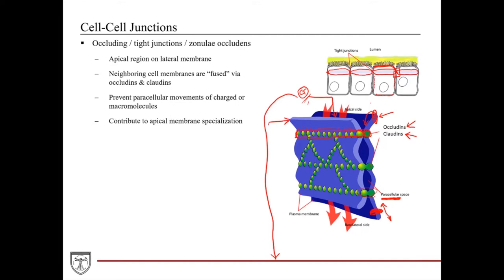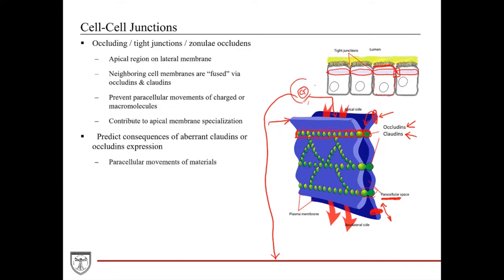Knowing all these functions, let's predict the consequences of aberrant expressions of claudins or occludins that may weaken the occluding junctions. Weakened tight junctions could allow large molecules to easily pass through the paracellular space into the connective tissue. This is bad news — we could be losing nutritious molecules like glucose, or large pathogens from the outside environment could gain access to our connective tissue and essentially into our body. So tight junctions are very important for sealing up our body.